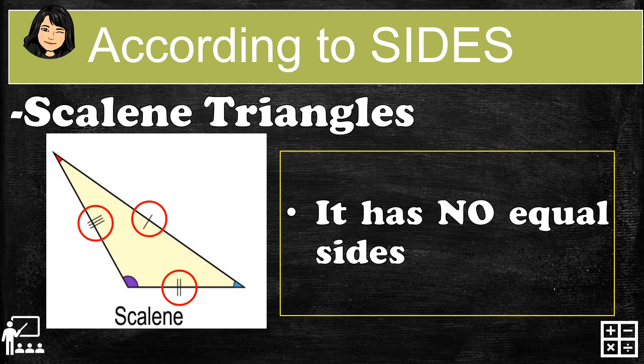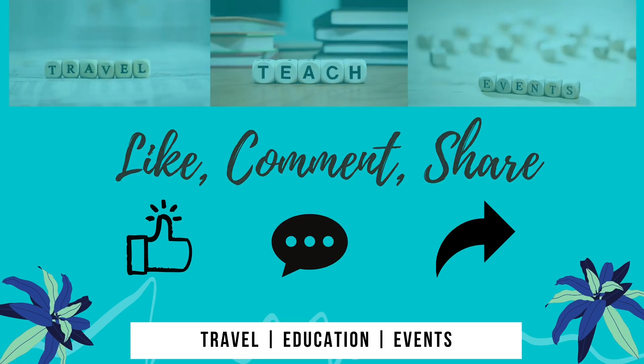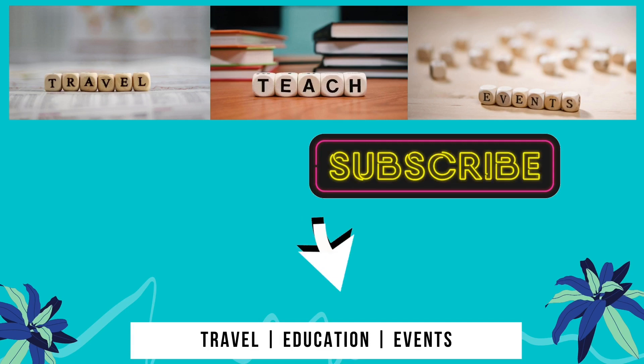Last is the scalene triangle. As you can see, each side has a different number of tick marks, meaning it has no equal sides — there is no equivalent measurement for each side. That is what we call the scalene triangle.